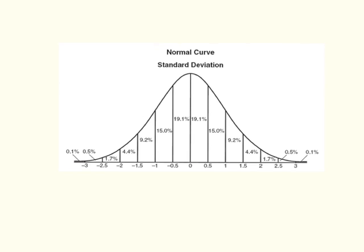This shows the same thing in terms of half of a standard deviation. The key point is that in a normal distribution, at any given point on the x-axis, we can tell precisely what proportion of the data are above and what proportion are below that point. This distribution is called a standard normal distribution, because the mean is set to zero and the scores along the x-axis are in standard deviations from the mean.